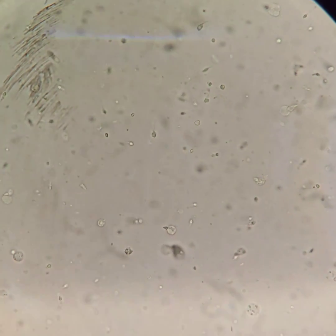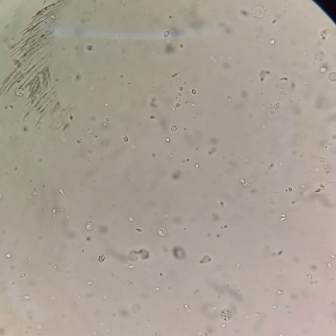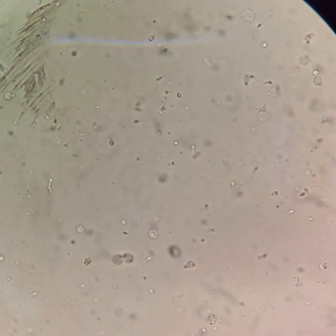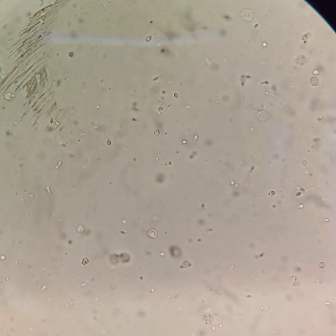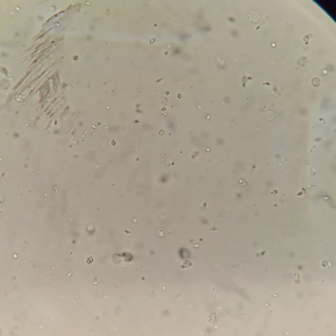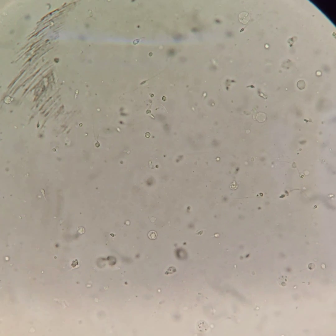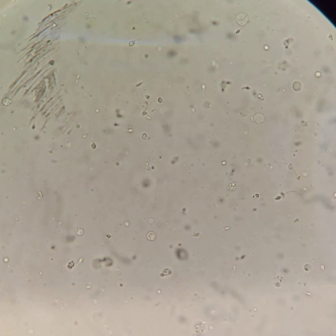To count total sperm count, formula is count one sperm as 1 million. The average sperm count in these fields are approximately 44. That means the total count of this sample is 44 million per ml.